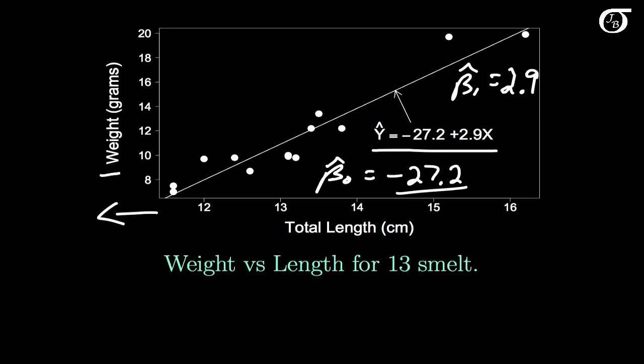Or in other words, the estimated difference in the mean weight for smelt that differ in total length by 1 centimeter is 2.9 grams.